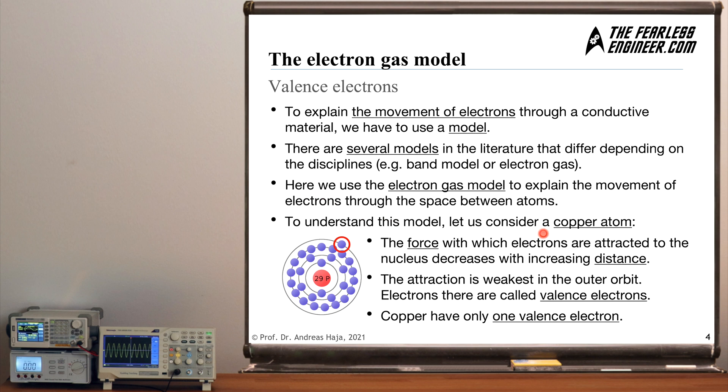And in order to understand this model, let's consider a copper atom. We have already seen in the previous video how atoms are built, that there is a core which is positively charged consisting of protons and neutrons, and they are encircled by electrons which exist on shells or orbits. And the further out an electron is, for example this one here, the weaker is the electrostatic force between this electron and the core. And the closer they are to the core, the stronger is this force. And the outermost electrons here, they have a special name, they are called valence electrons.